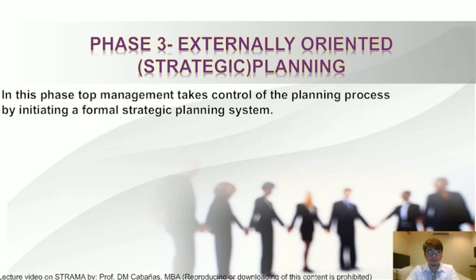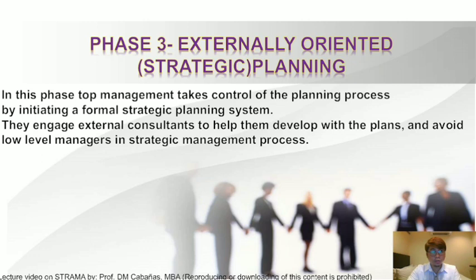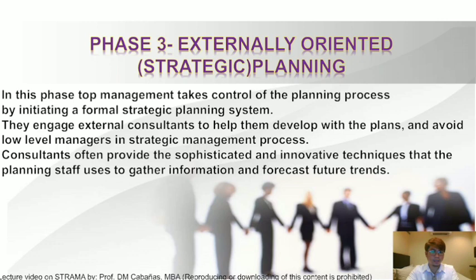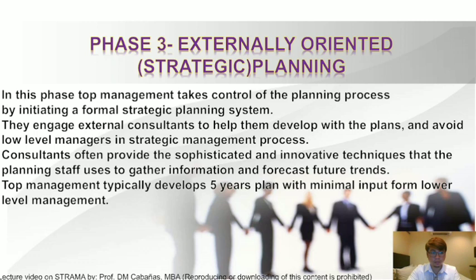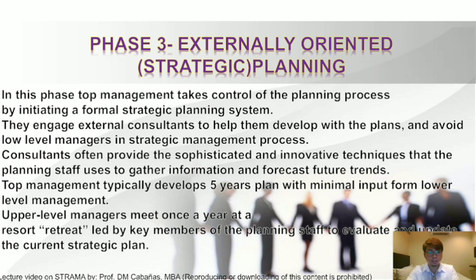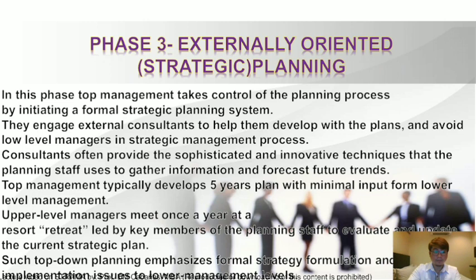Phase three, externally oriented strategic planning: top management takes control of the planning process by initiating a formal strategic planning system. They engage external consultants to help develop plans and avoid involving low-level managers in the strategic management process. Consultants provide sophisticated and innovative techniques to gather information and forecast future trends. Top management typically develops five-year plans with minimal input from lower-level management, meeting once a year at a resort retreat to evaluate and update the current strategic plan. This top-down planning emphasizes formal strategy formulation, leaving implementation to lower management.